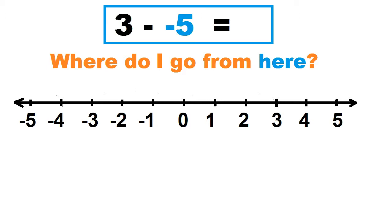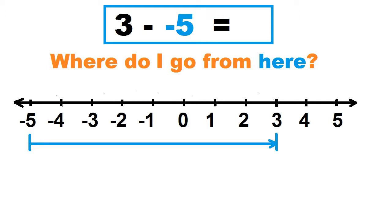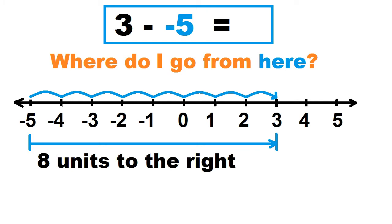Example: 3 minus negative 5. Where do I go from negative 5? Count the number of units from negative 5 to 3, and take note of the direction. To the right is positive, to the left is negative. Let's count: 1, 2, 3, 4, 5, 6, 7, 8. That's 8 units to the right. So 3 minus negative 5 equals 8.